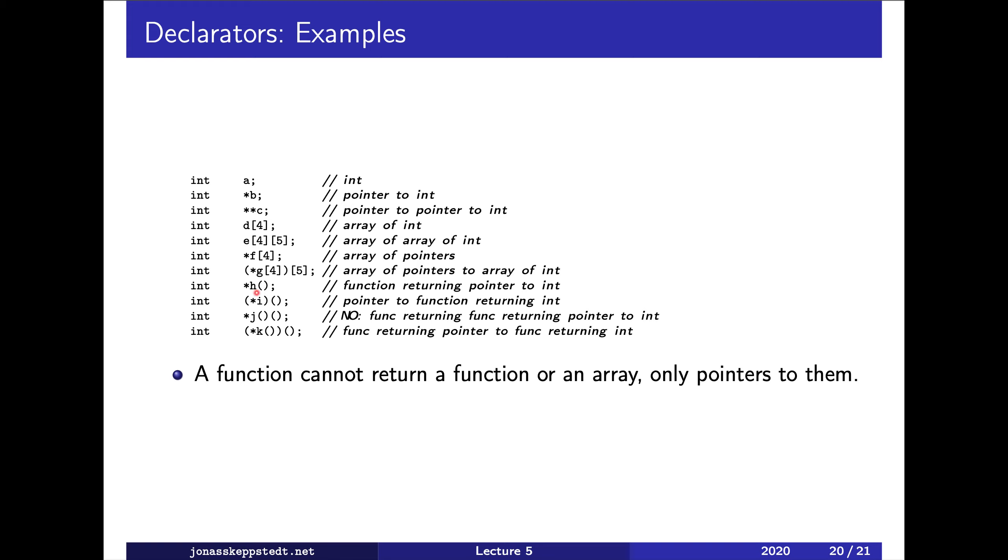G is also an array of pointers to arrays where each element is an int. H is a function which returns a pointer to int. And I, we start looking to the right. We find nothing interesting. But to the left, we find a pointer—I mean a star. So I is a pointer to a function which returns an int.